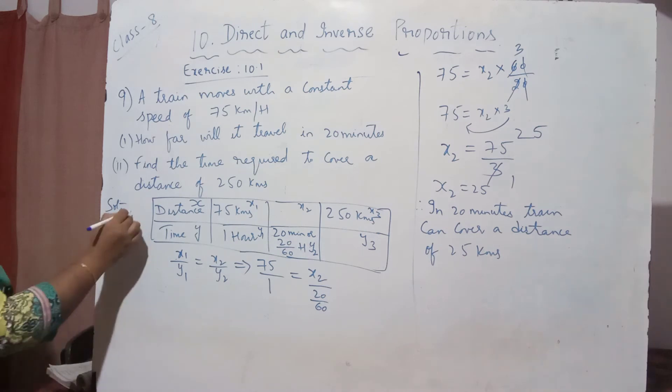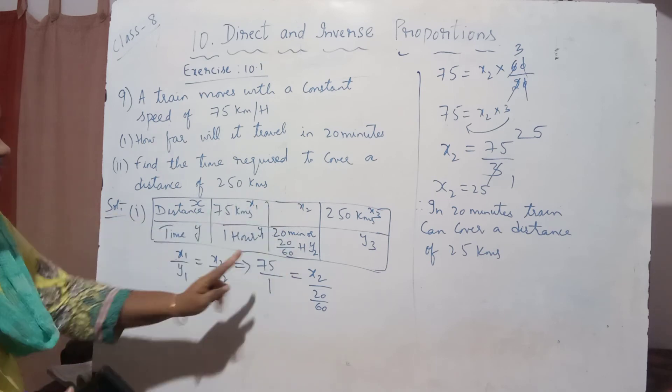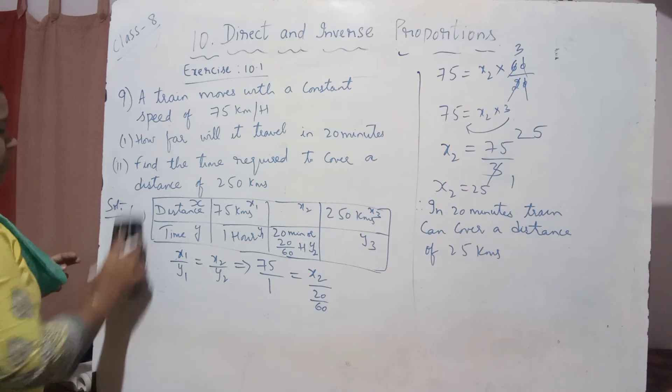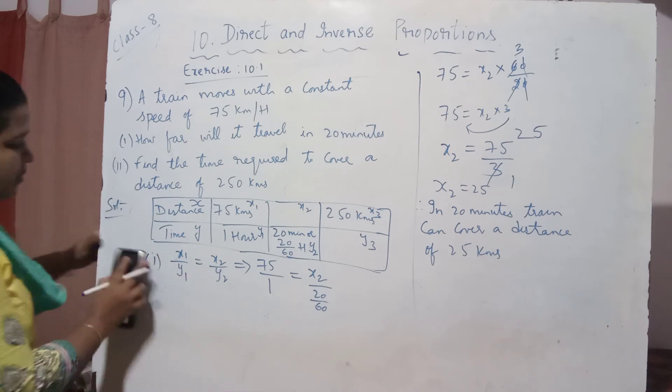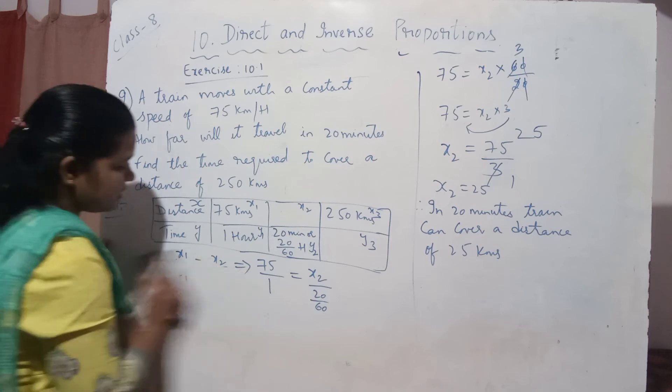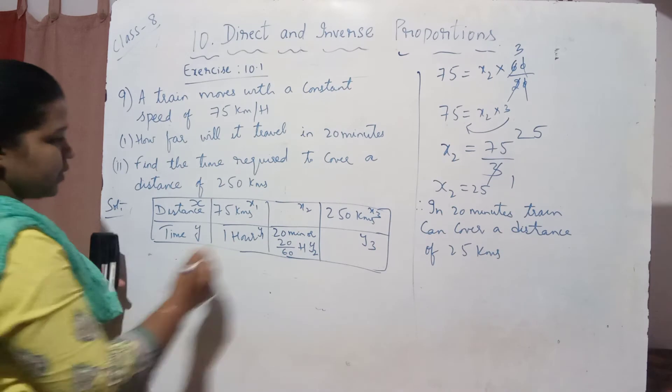This is the solution for your first part. Now, let us try to do the second one. I am erasing it. This is for the first one. The table is the same. I am drawing the box. After the first part, I am erasing it. Now, let us do the second part.